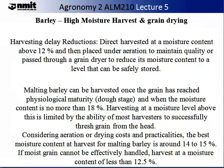Considering aeration or drying costs and practicalities, the best moisture content for harvest of malting barley is around 14% to 15%. If moist grain cannot be effectively handled, harvest at a moisture content of less than 12.5% is recommended.